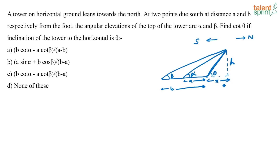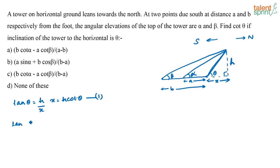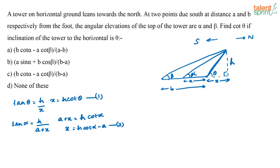Let us take this horizontal length as x. If I consider this right angle triangle, tan theta = h/x, or x = h·cot theta. This is equation 1. Now consider the bigger triangle for tan alpha: tan alpha = h/(a + x), so a + x = h·cot alpha, which gives x = h·cot alpha − a. This is equation 2.